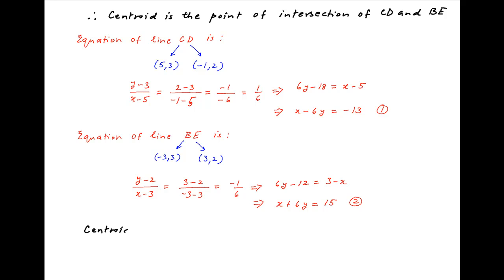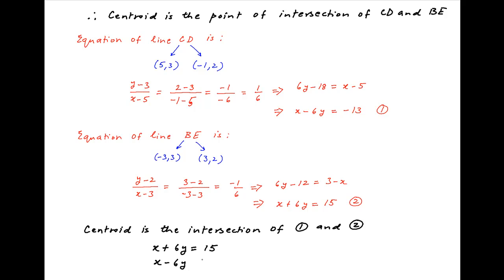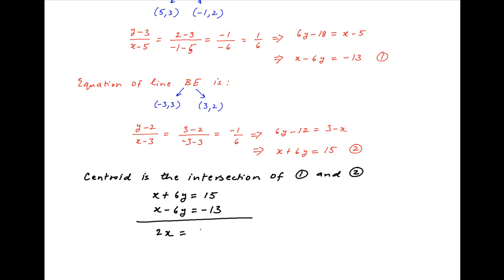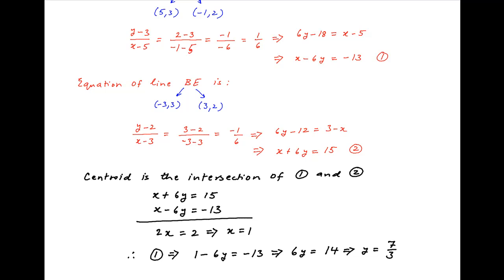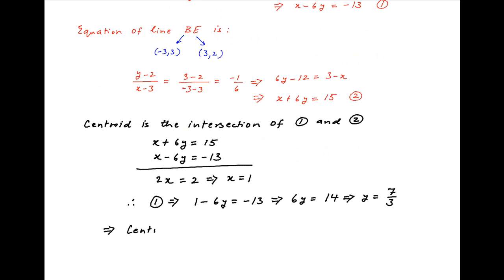The centroid of the triangle can be obtained by solving equations 1 and 2 for x and y. Adding the two equations gives 2x = 2, which implies x = 1. Substituting into equation 1: 1 - 6y = -13, which gives 6y = 14, so y = 7/3. Therefore, the coordinates of the centroid of triangle ABC are (1, 7/3), which is the required answer.